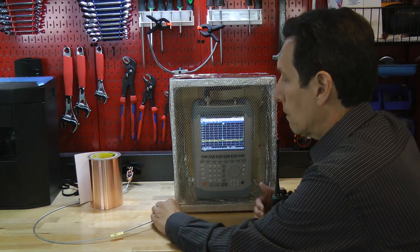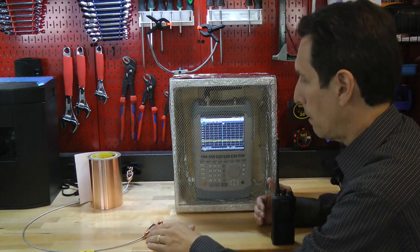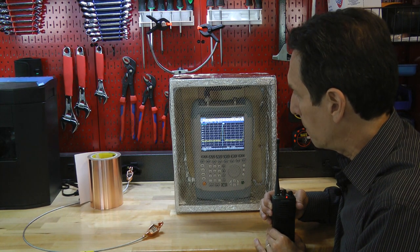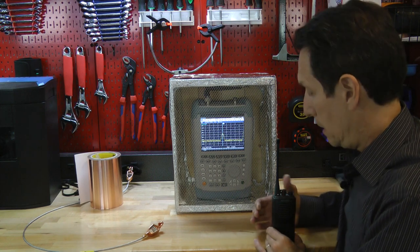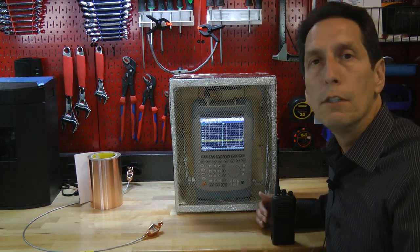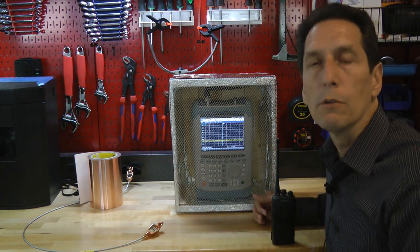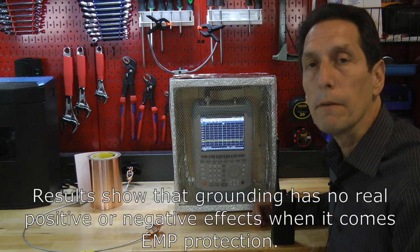We then disconnect the ground cable so that now it's ungrounded. We repeat the experiment. And we get up to a level of maybe about minus 85, 84, 85 dBm. So, again, a one to two dB difference in the amount of signal that got inside there, which is very, very small. In fact, that's sort of in the margin of error of the experiment here.